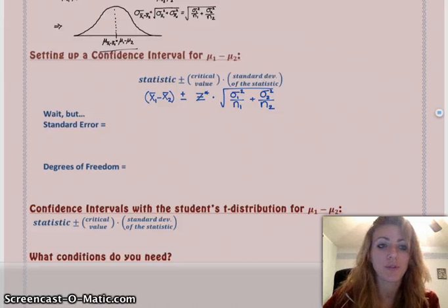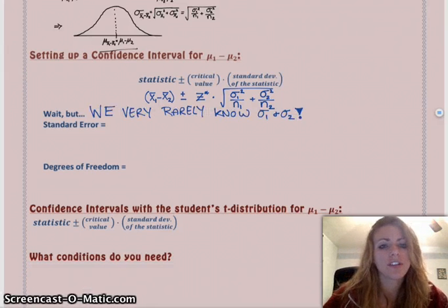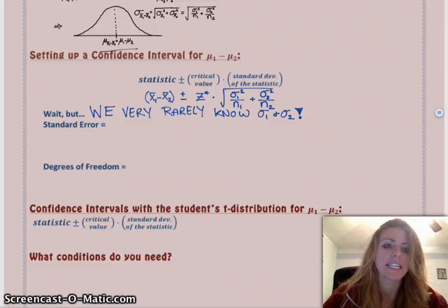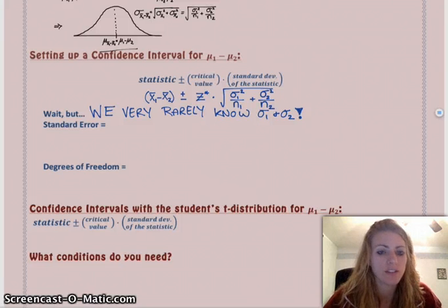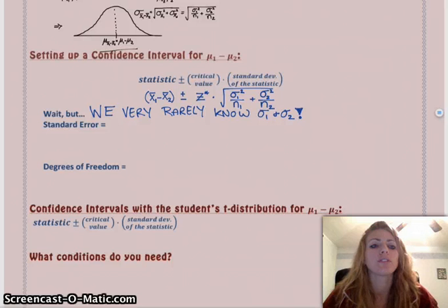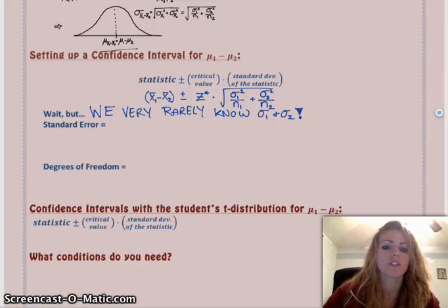Finally, we can get to the realistic scenario, which is, wait, but we don't know sigma. So, instead, we have to use standard error because we don't ever know sigma. So, we have to use the standard deviation of the statistic instead. But, oftentimes, that's way far away from the true sigma. And so, when you use standard error with means, you have to jump to the t distribution and use your degrees of freedom and such.